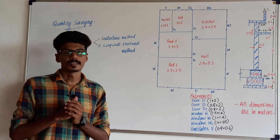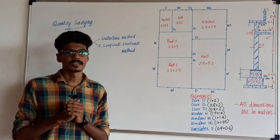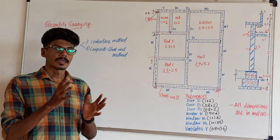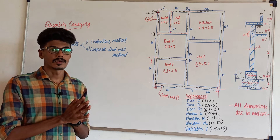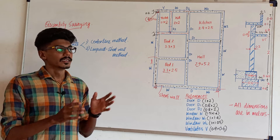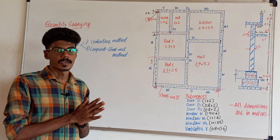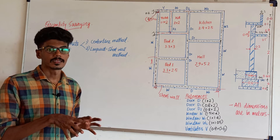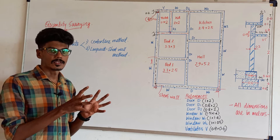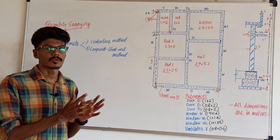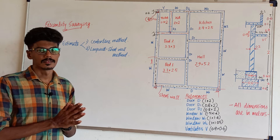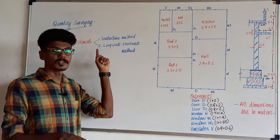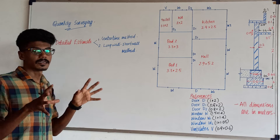We are going to discuss a detailed estimate. If we are going to build a building, we can install construction with bricks and tile, apply to all the surface, and make a foundation in meter cubes. We have to learn two methods: the first one is the central line method and the second one is the long wall and short wall method.